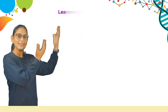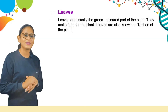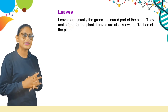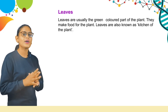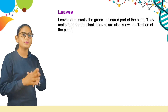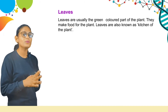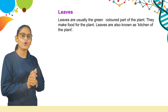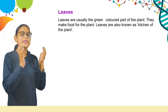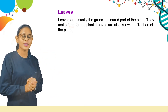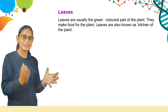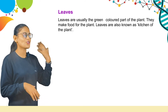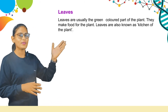Now, leaves. Leaves are usually the green-colored part of the plant. They make food for the plant. Leaves are also known as the kitchen of the plant — because just as we prepare food in the kitchen, leaves prepare food for the plant. So we call leaves the kitchen of the plant.